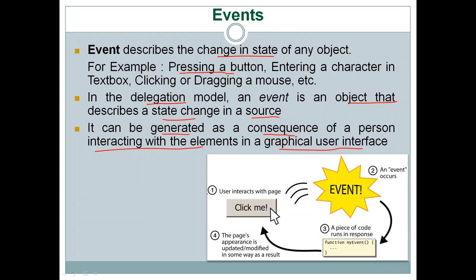The diagram below explains how an event is generated and what happens when the event occurs. You can see a button in the diagram. When you click on the button, an event is generated. As a consequence of that event, a piece of code is executed.